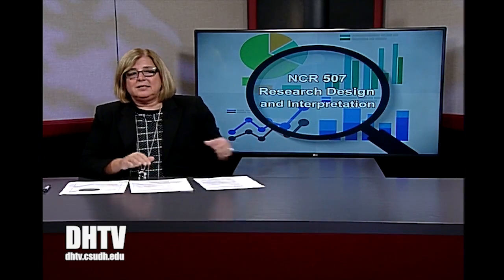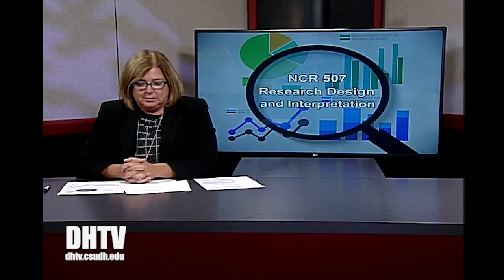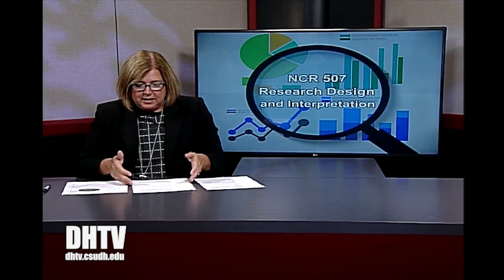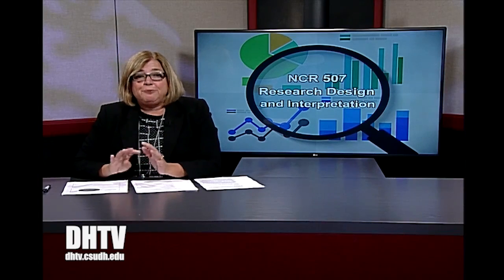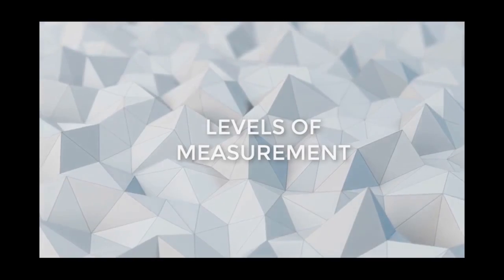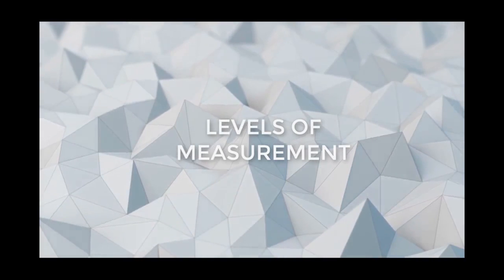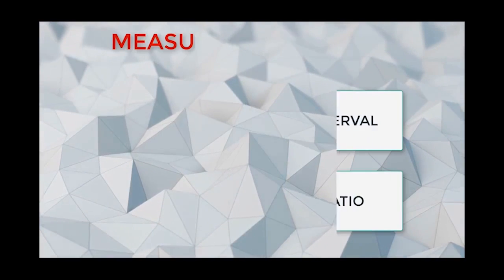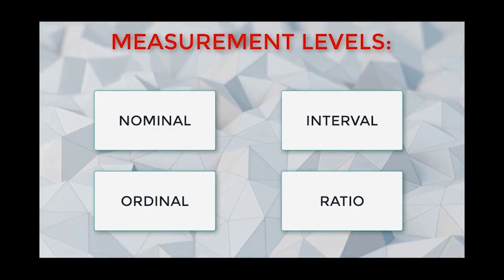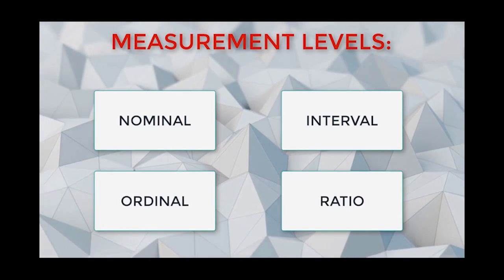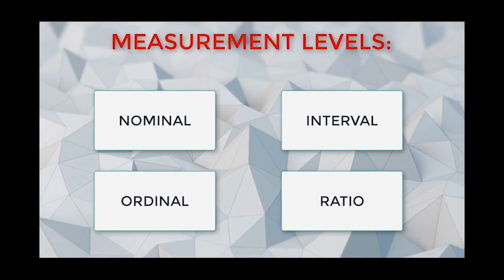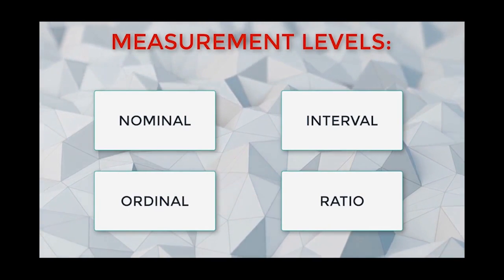The next topic is the levels of measurement. You and I can measure on different levels, and we want to identify the four different levels of measurement. One of the most basic principles is the levels of measurement used in data analysis. The four measurement levels are: nominal, ordinal, interval, and ratio. The first key distinction is to differentiate categorical data from continuous data — whether data are collected into categories or in a continuous format.